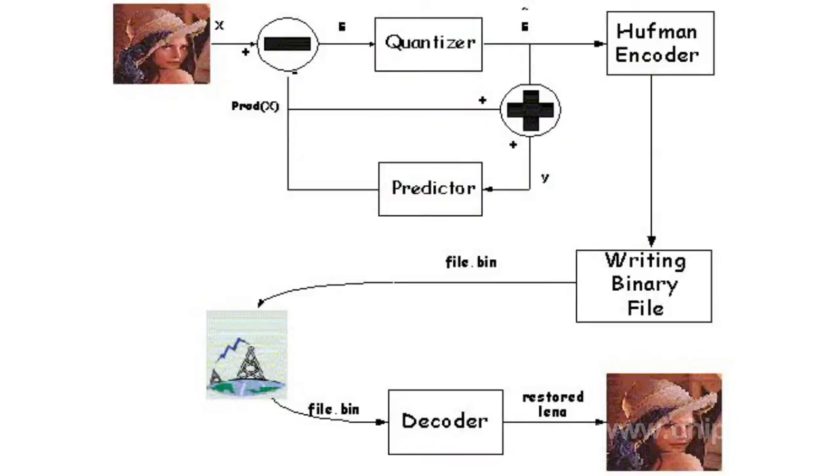Differential pulse code modulation encodes the signal in the form of differences between current and previous values. For audio data, this type of modulation reduces the required number of bits per sample by about 25%.